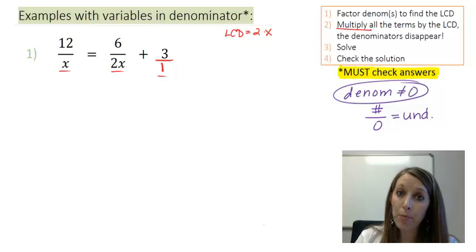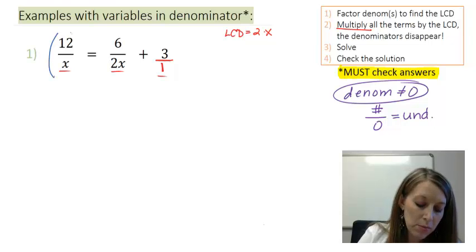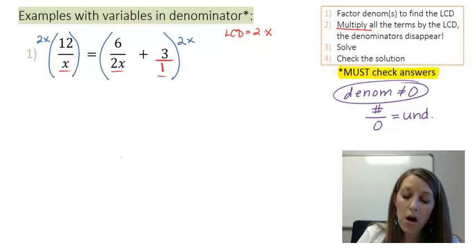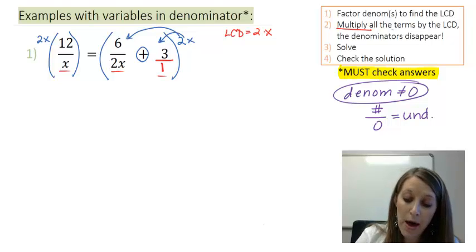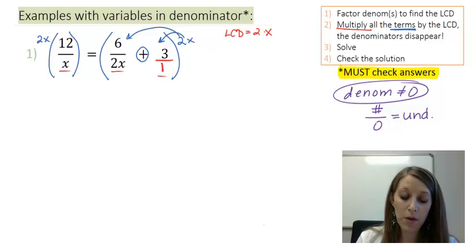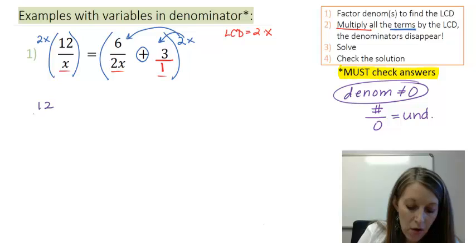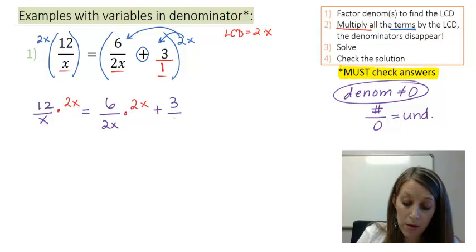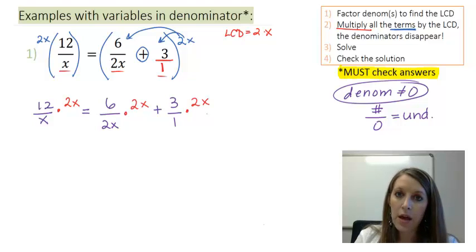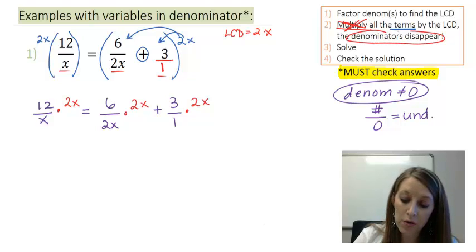Now I need to multiply both sides of my equation by this LCD of 2x. On the right, since I have an addition, I have to distribute my 2x through — I take 2x by all of my terms. So I have 12 over x times 2x, equal to 6 over 2x times 2x, plus 3 over 1 times 2x. I want to emphasize that you are not actually multiplying — you are more importantly canceling to get rid of all of those denominators.